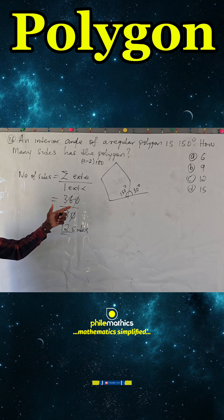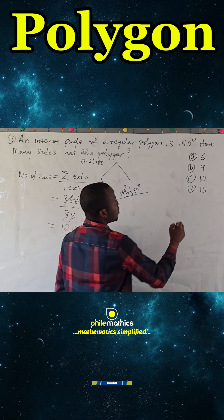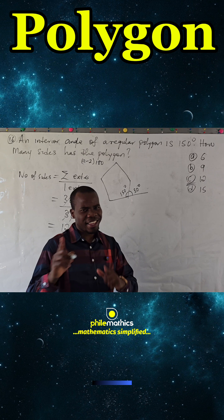That regular polygon must have 12 sides, which is 6. Thank you for watching.